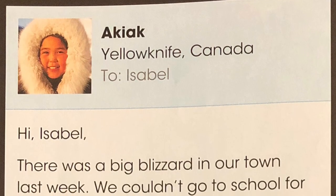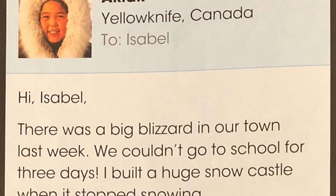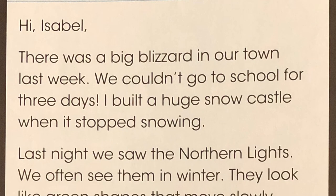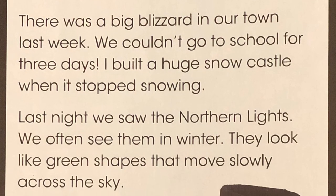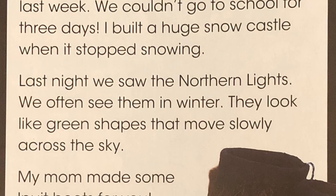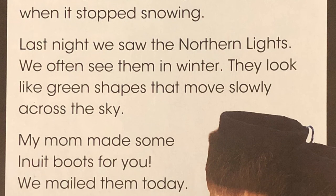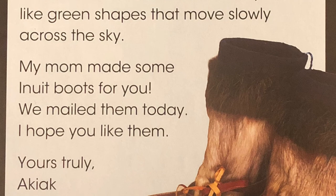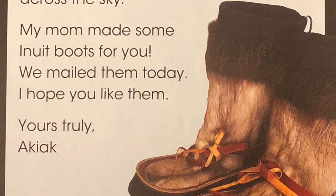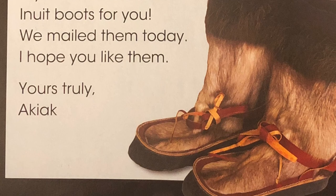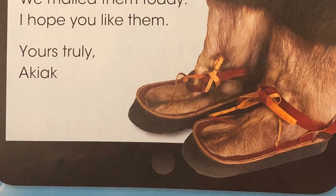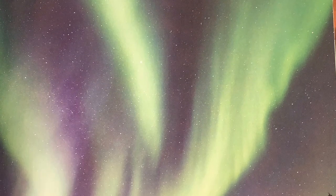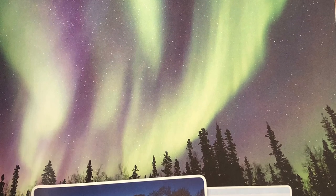Akiak, Yellowknife, Canada. To Isabel. Hi, Isabel. There was a big blizzard in our town last week. We couldn't go to school for three days. I built a huge snow castle when it stopped snowing. Last night, we saw the northern lights. We often see them in winter. They looked like green shapes that moved slowly across the sky. My mom made some Inuit boots for you — we mailed them today. I hope you like them. Yours truly, Akiak. You can see the northern lights most clearly in the Arctic. Look at my snow castle!